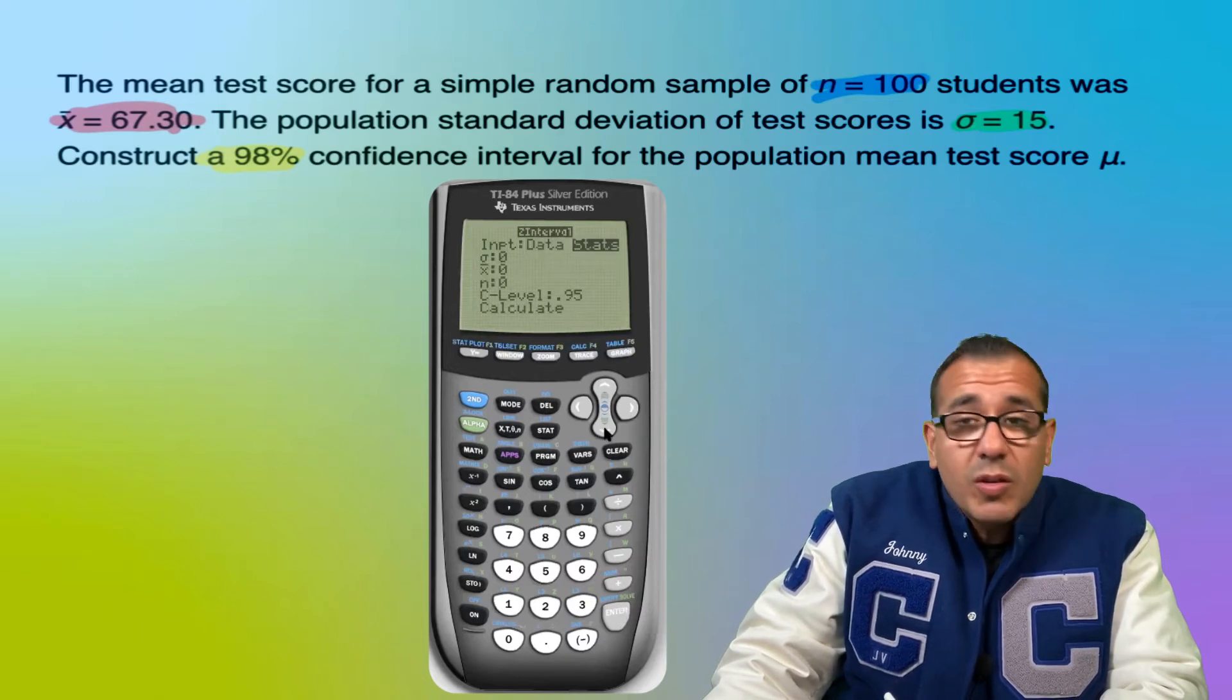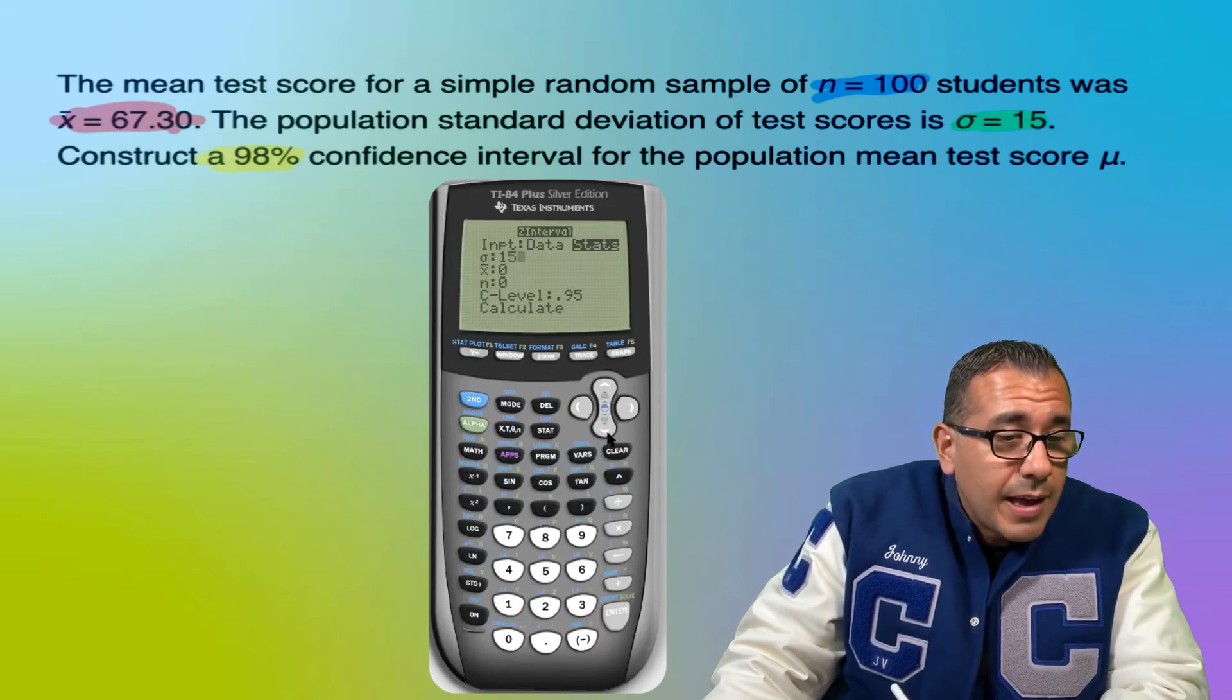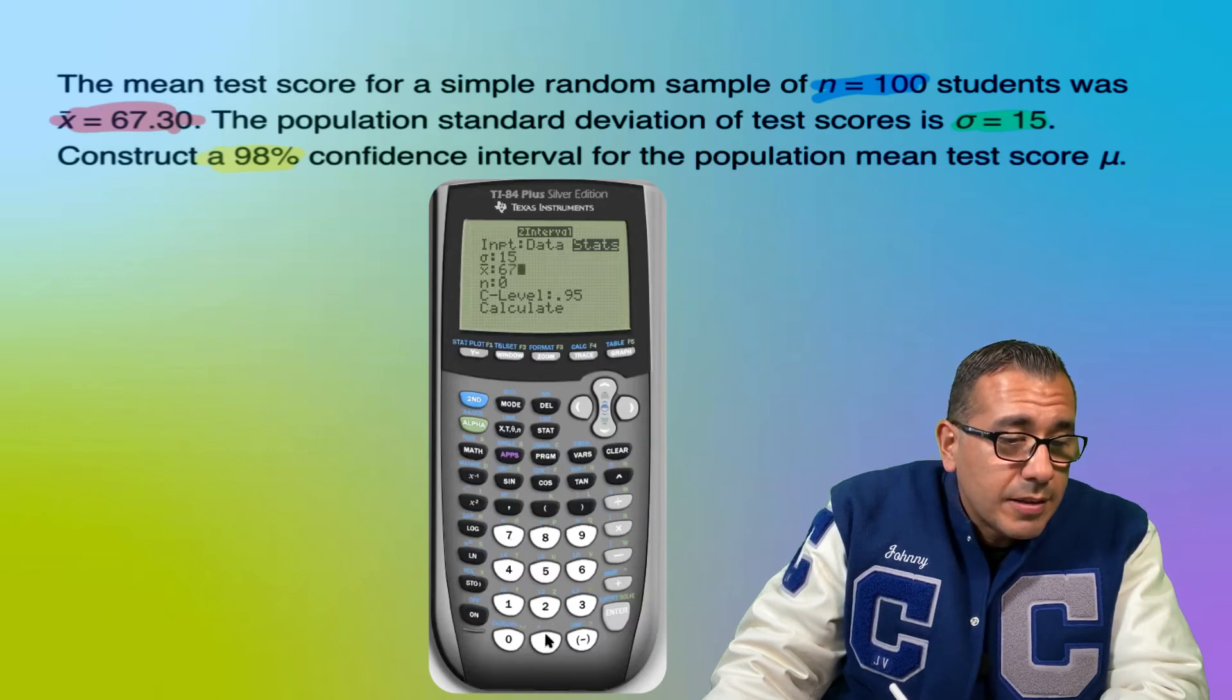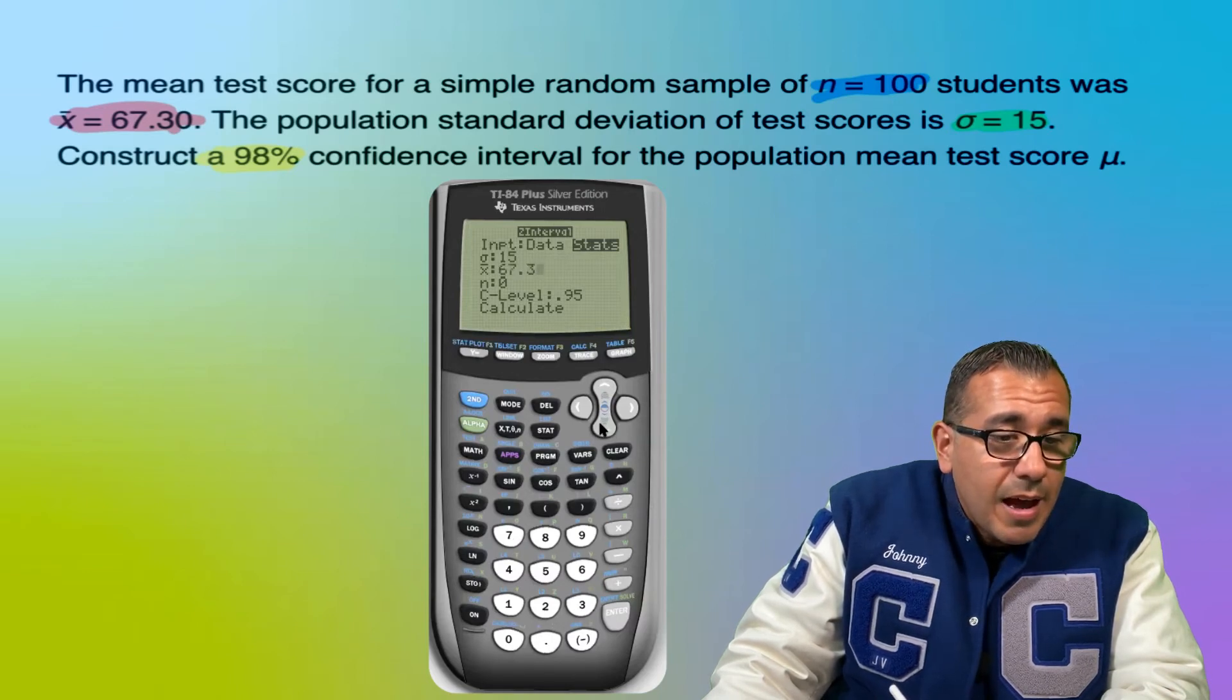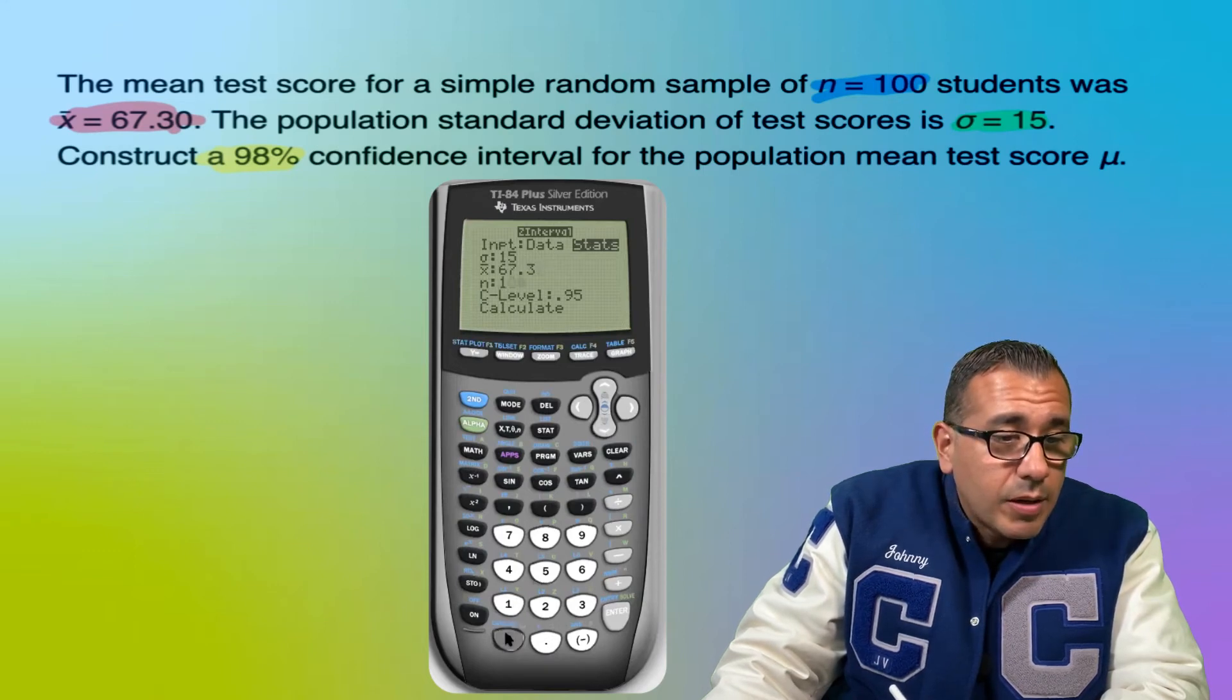And then our standard deviation, we just plug everything in. So our standard deviation σ is 15. Our mean x̄ is 67.3. Our n value is 100. So we'll put 100 there. And the confidence level is 0.98. And then just go ahead and hit calculate.